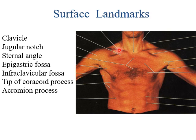Just below the lateral part of the clavicle, there is a depression called the infraclavicular fossa. If you palpate this fossa, you will get the tip of the coracoid process, which is a part of the scapula. So the tip of the coracoid process can be felt in the infraclavicular fossa.